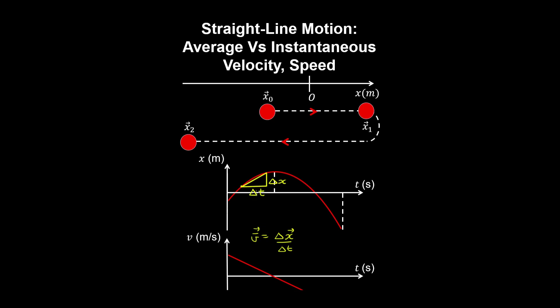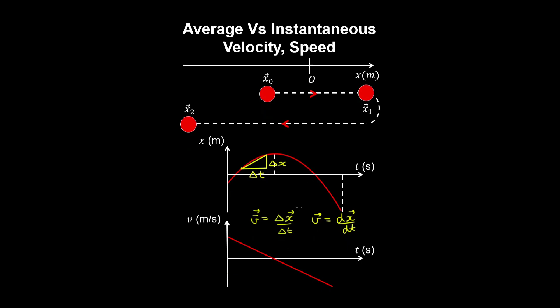Now if we take the limit as delta t approaches zero, we obtain the instantaneous velocity. So you can see that the instantaneous velocity is the slope of the tangent to the position-time curve at a particular time, and the velocity is a vector which also has a length and a direction.